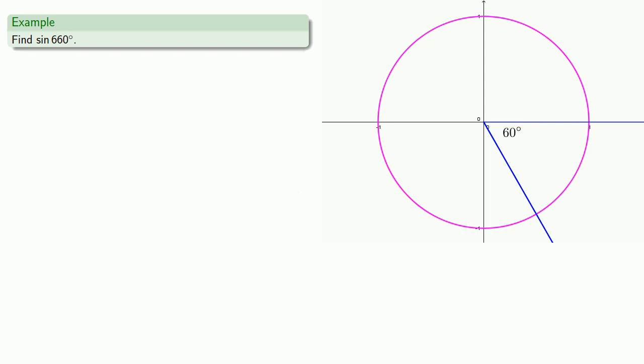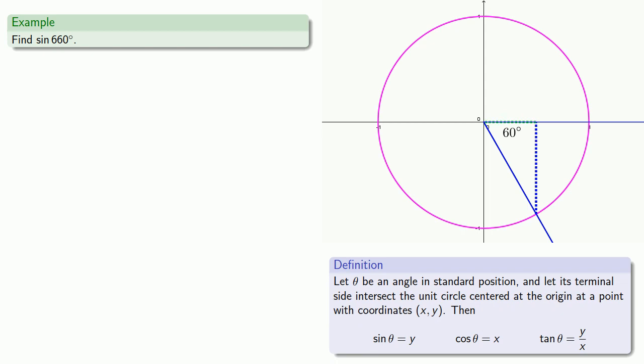Again, we'll look for the right triangle. And remember, sine is the vertical distance. Since sine of theta is the y value, and y is negative in the fourth quadrant, sine of 660 degrees will also be negative.